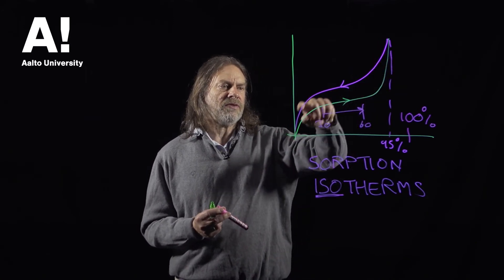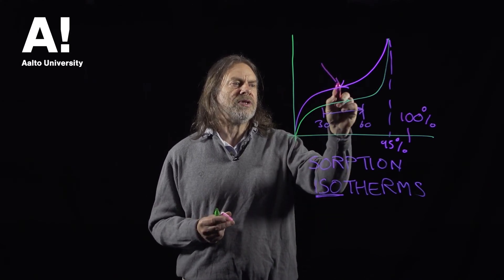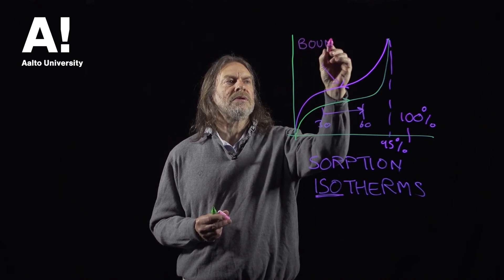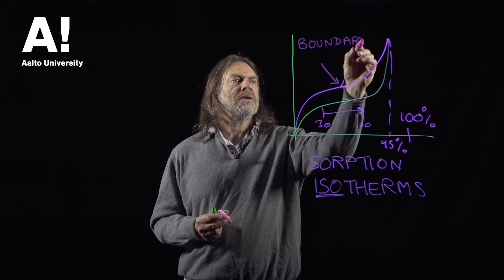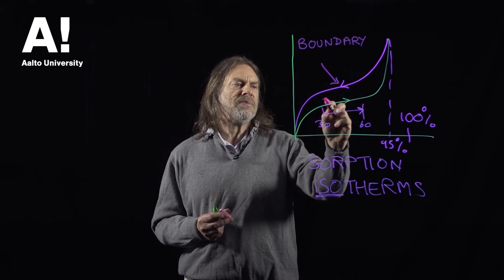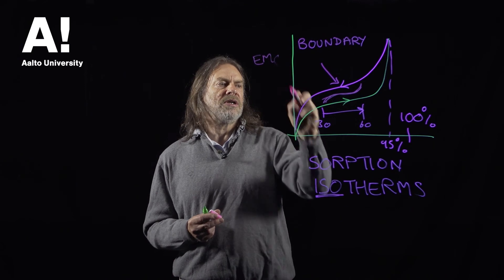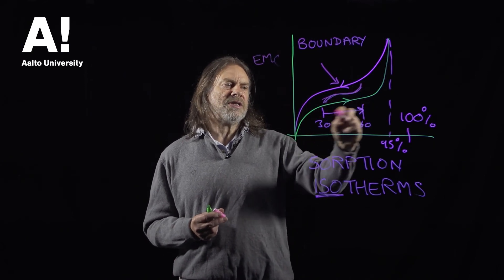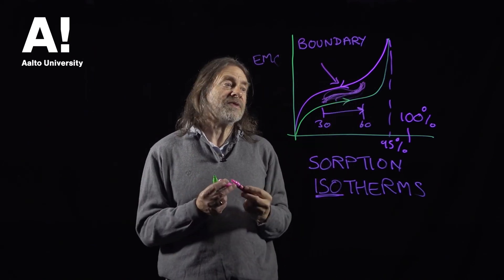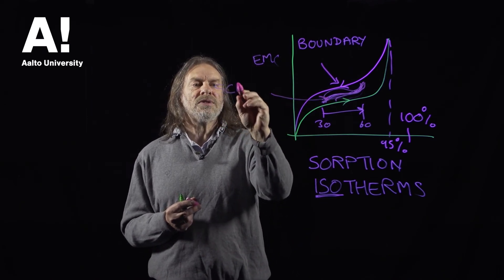These curves obtained from the experiment represent the extreme situations and they're referred to as boundary curves. When there's this constant fluctuation and the wood is not in an equilibrium situation, it will be showing equilibrium moisture contents which vary as the relative humidity goes up and down. Those sorts of curves that sit inside are called scanning curves.